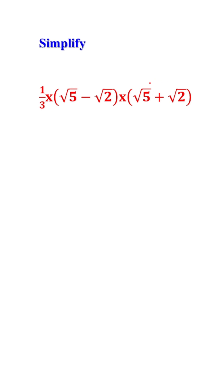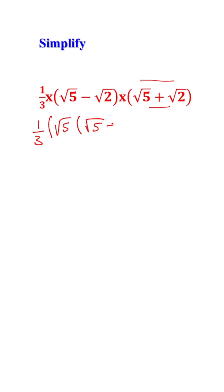In this case we can multiply by distributing — this is equal to one-third into the square root of 5 times the whole term, and similarly negative square root of 2 times this term. So we distribute: square root of 5 times (square root of 5 plus square root of 2), minus square root of 2 times (square root of 5 plus square root of 2).